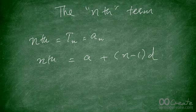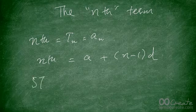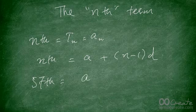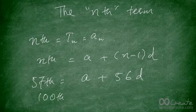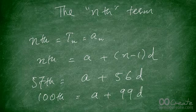Applying this: if you're looking for the 57th term, it will be a + 56d. For the 100th term, it will be a + 99d, and so on.